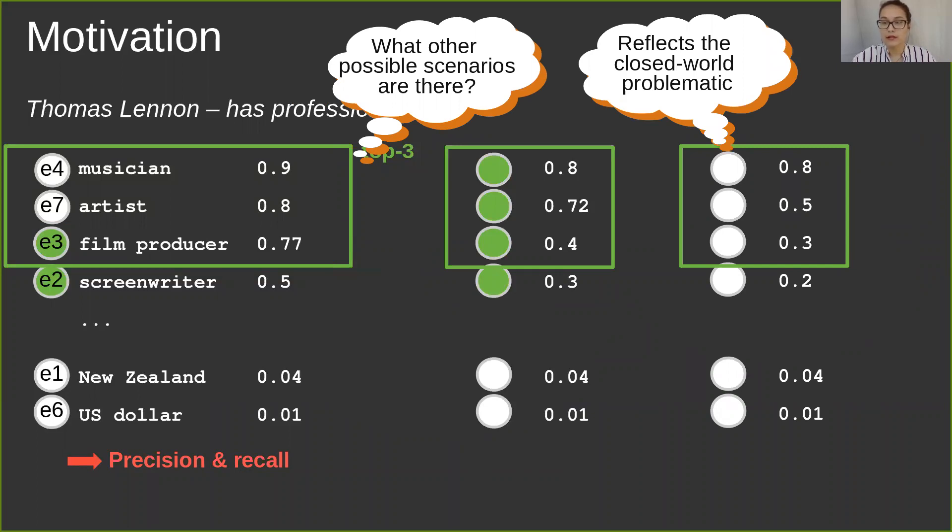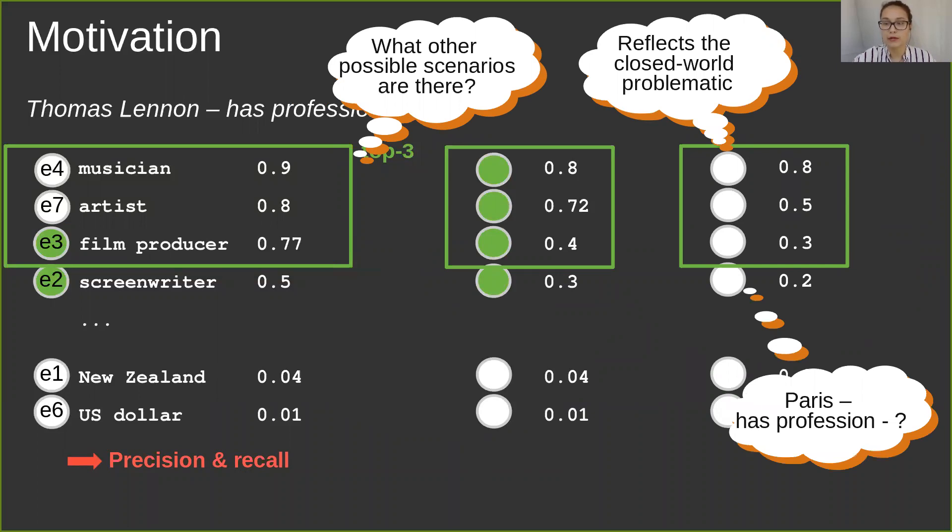Another possibility is that an automatic completion process confronts a nonsensical query where no answer is imaginable, like Paris has no profession, and the model has to deal with it.